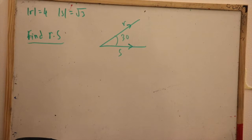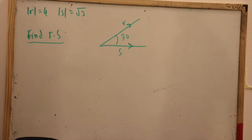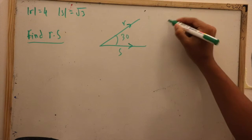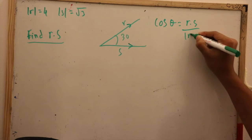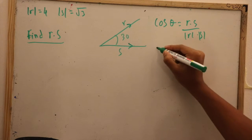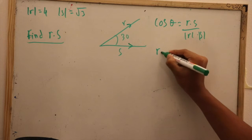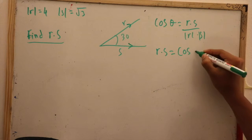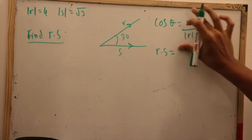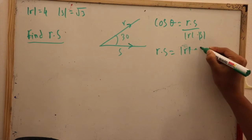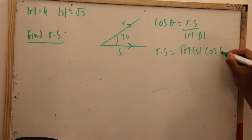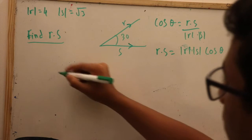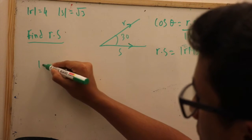The following question asks us to find what R dot S will be. We have to use the dot product formula, where cosine theta equals R·S divided by the absolute value of R times the absolute value of S. We were given that the absolute value of R equals 4 and the absolute value of S equals square root of 3.